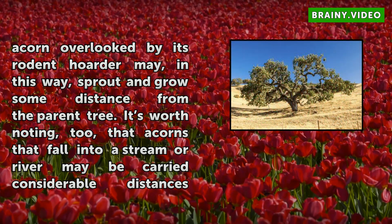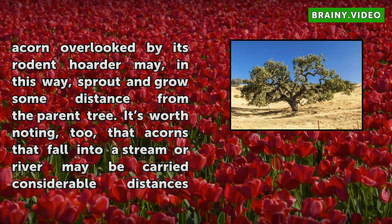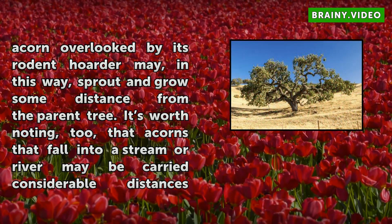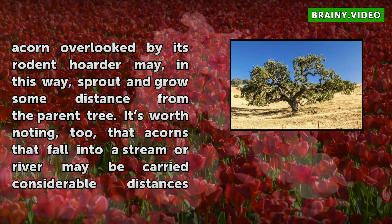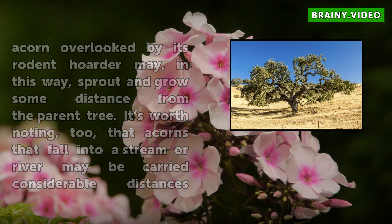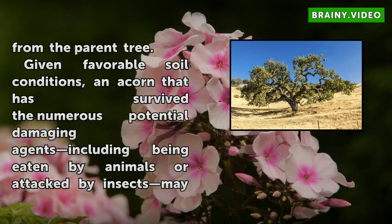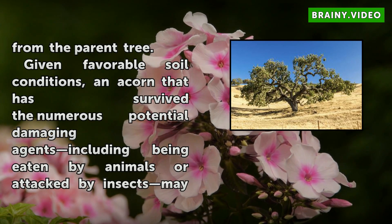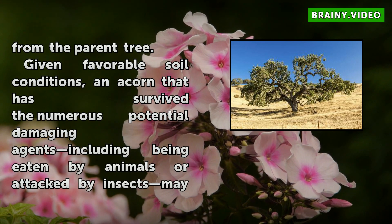Given favorable soil conditions, an acorn that has survived the numerous potential damaging agents — including being eaten by animals or attacked by insects — may send down its taproot, send up its shoot, and begin its life as a young seedling.